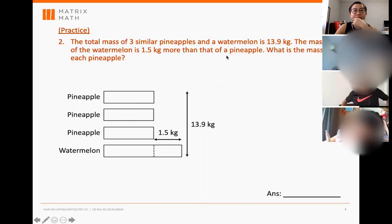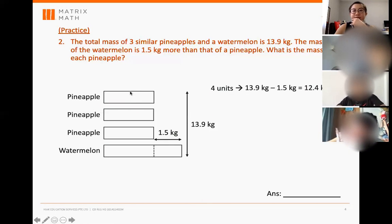So next step, what should we do, Tyler? 13.9 kg minus 1.5 kg equals 12.4 kg. Very good. And this is your four units. Very good.